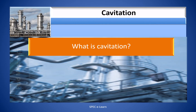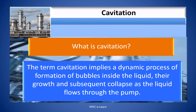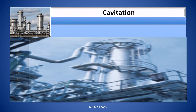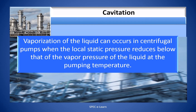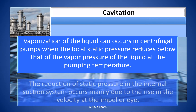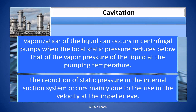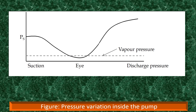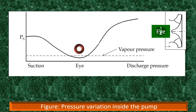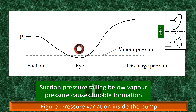What is cavitation? The term cavitation implies a dynamic process of formation of bubbles inside the liquid, their growth, and subsequent collapse as the liquid flows through the pump. Vaporization of the liquid can occur in centrifugal pumps when the local static pressure reduces below the vapor pressure of the liquid at the pumping temperature. The reduction of static pressure in the internal suction system occurs mainly due to the rise in velocity at the impeller eye. As shown in this figure, the suction pressure decreases as the liquid approaches the eye of the impeller, and just at the eye the pressure falls below the vapor pressure, causing bubble formation.